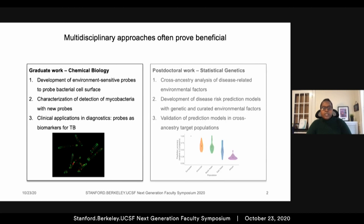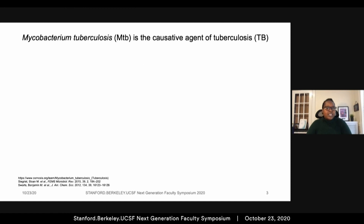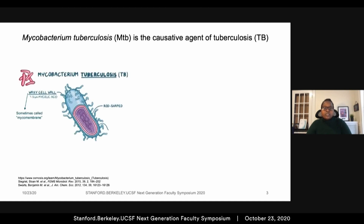I'll begin with my PhD work. Here's the 30-second overview of Mycobacterium tuberculosis, or MTB, the causative agent of tuberculosis. MTB is a rod-shaped bacteria covered with a thick, waxy cell surface. This surface, often called the mycomembrane because it is composed of mycolic acids, is a highly hydrophobic environment and is particularly important for pathogenesis.